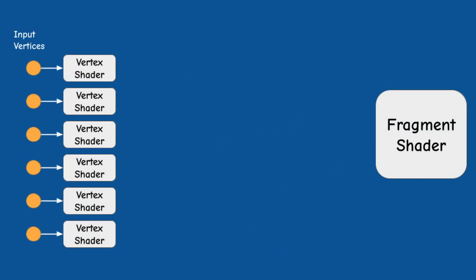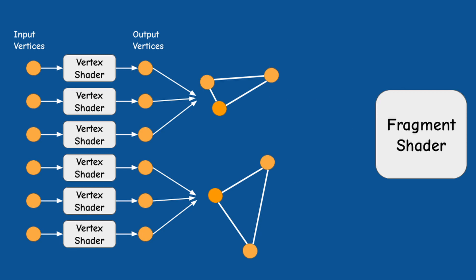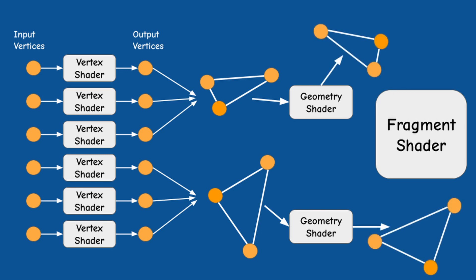Now, remember that the GS is an optional shader stage. Without it, the pipeline assembles the output of the vertex shader into complete primitives and passes them on to the rasterizer. When the GS is active, it explicitly outputs zero or more primitives, and these primitives reach the rasterizer, so everything after the GS continues as usual.